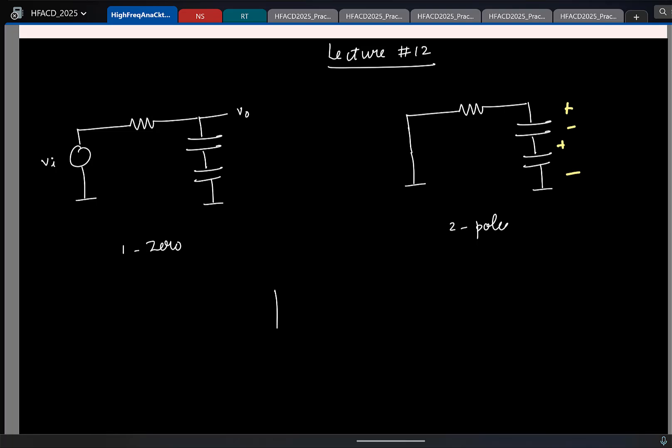But as you already pointed, this is your world famous first order RC circuit. This is basically the same circuit. So here, from your understanding, how many poles and zeros should be present here? One pole and zero zeros, correct. But here I see that I seem to have two poles and one zero. So, what do you think is happening to the additional pole and zero?